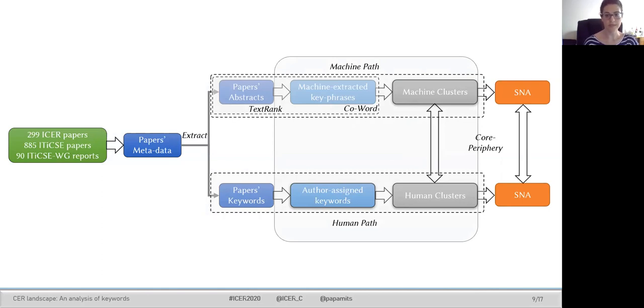For the author-assigned keywords, we adopted a different approach. Two researchers with many years of experience in computing education literature manually grouped the keywords into related themes. We merged different keywords that represent the same concept and grouped distinct but related terms, such as academic integrity with plagiarism and cheating. This grouping is subjective and was carried out by consensus. The author-assigned keywords were grouped into 23 distinct clusters.